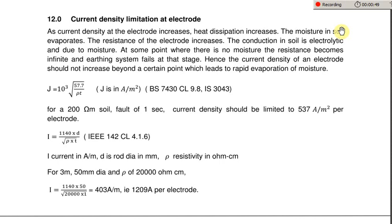And as the moisture content reduces, the resistance of the electrode increases. So at some point of time, when the moisture content is very very low or absent, the resistance of the electrode becomes infinite. This is as good as some conductor being cut.